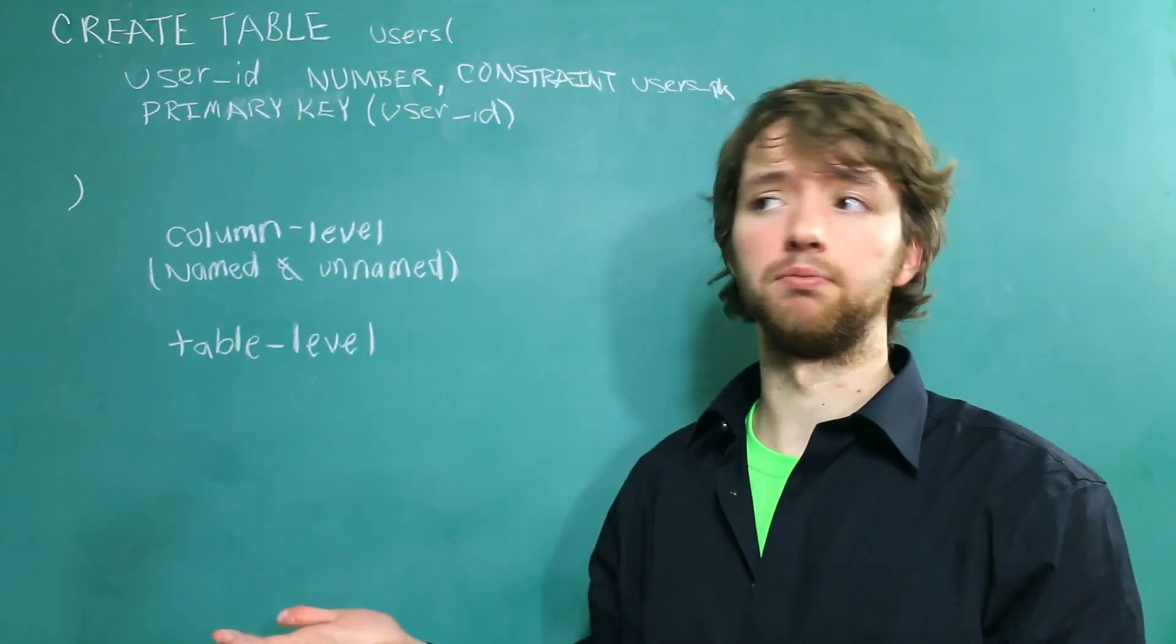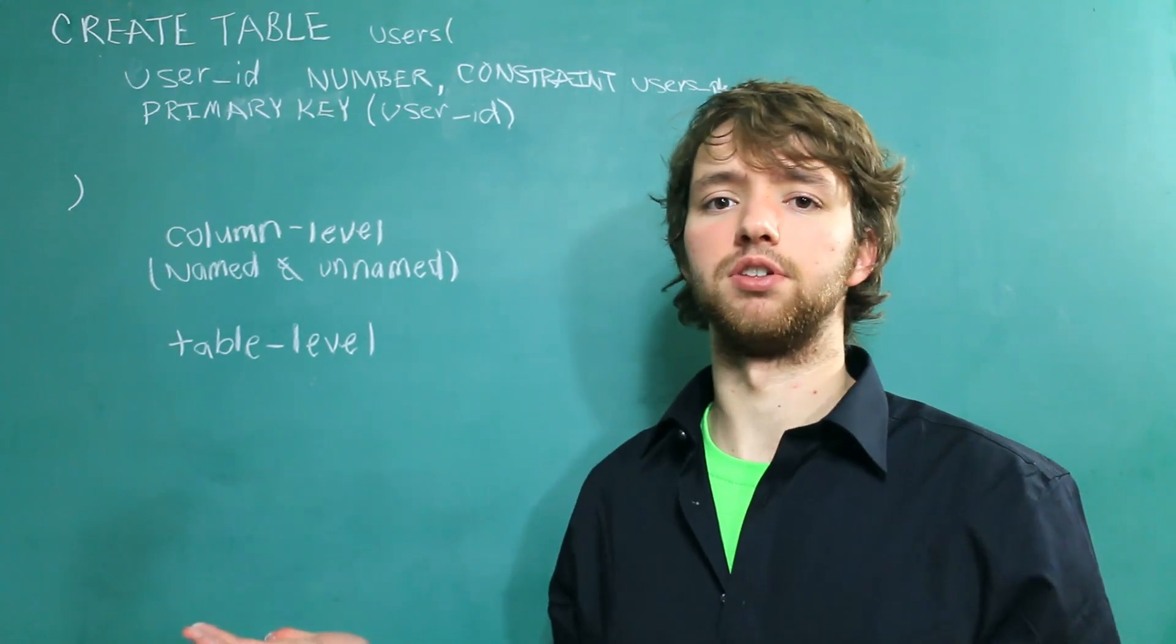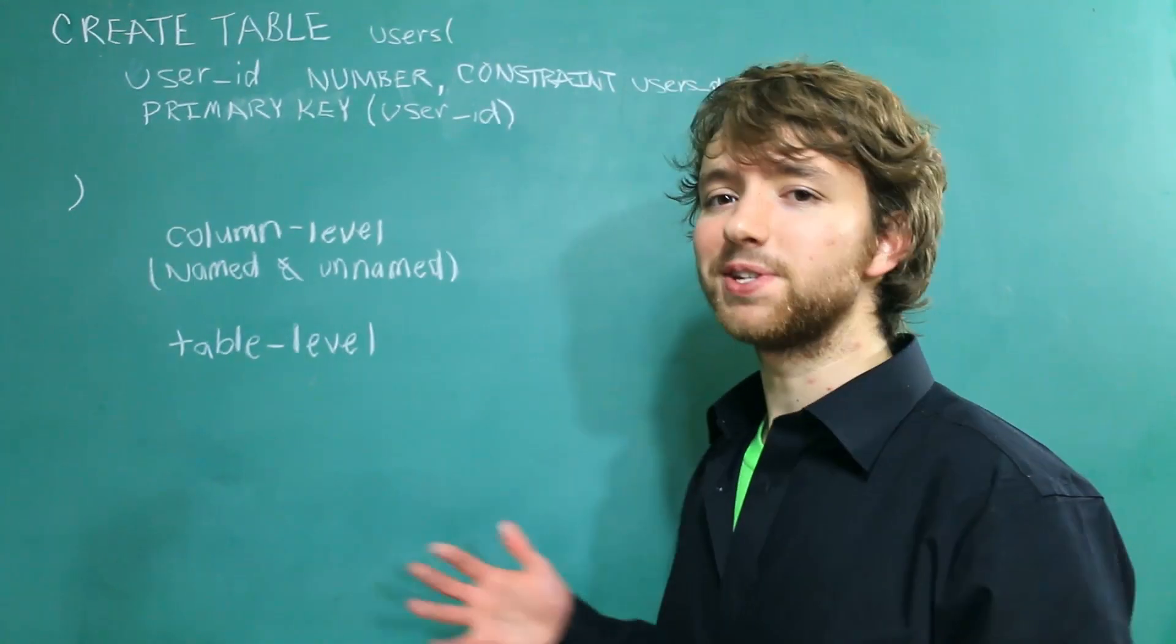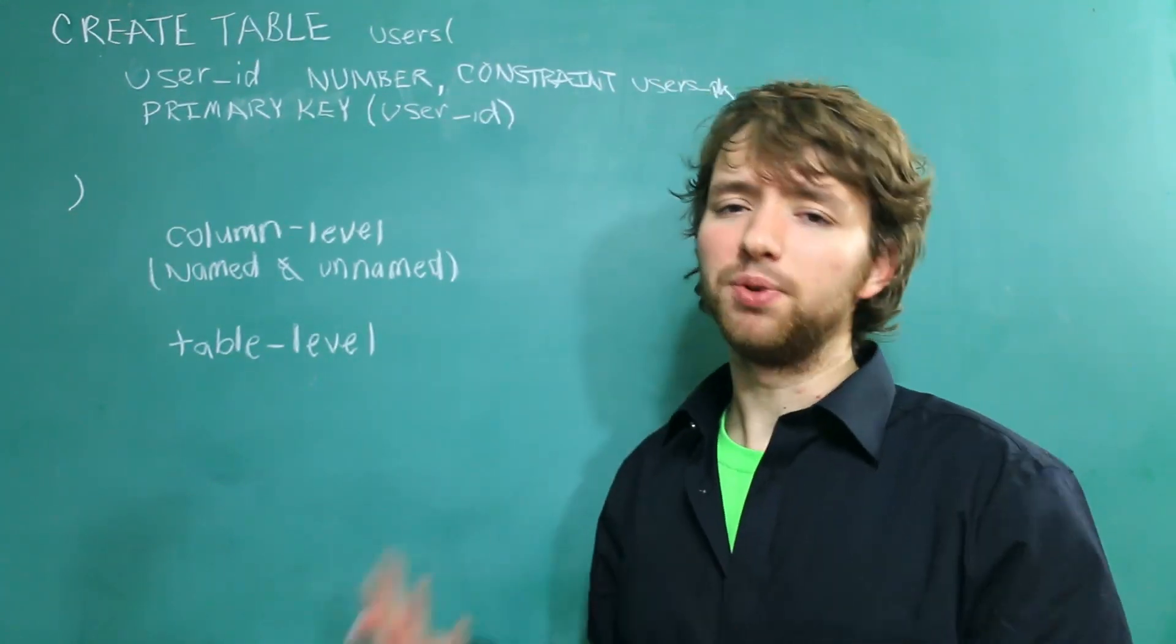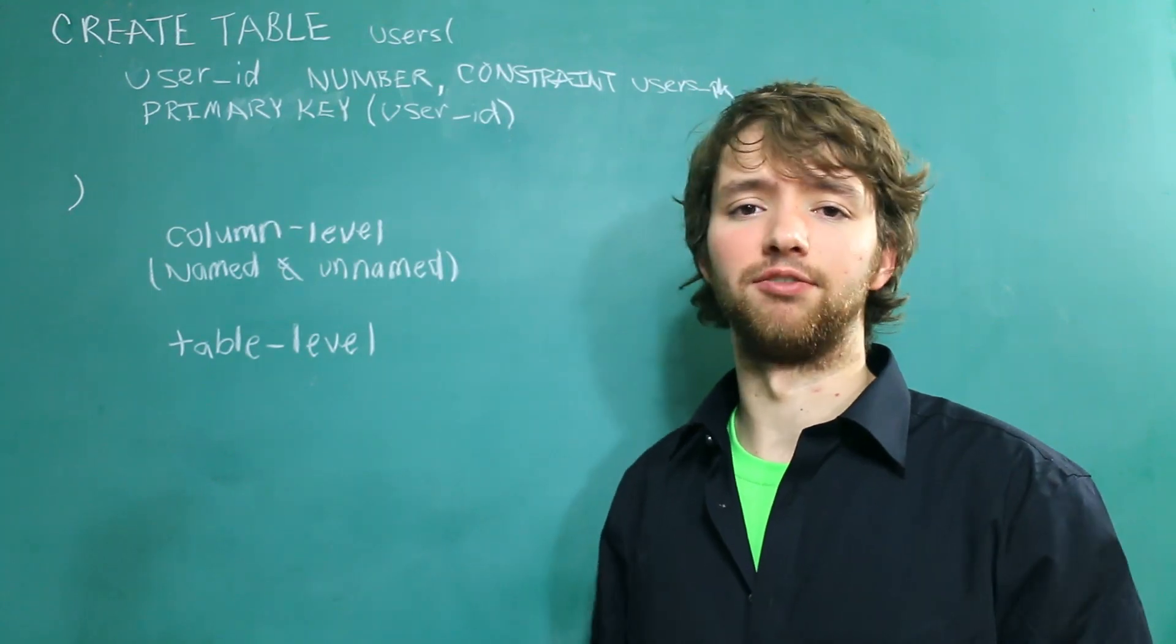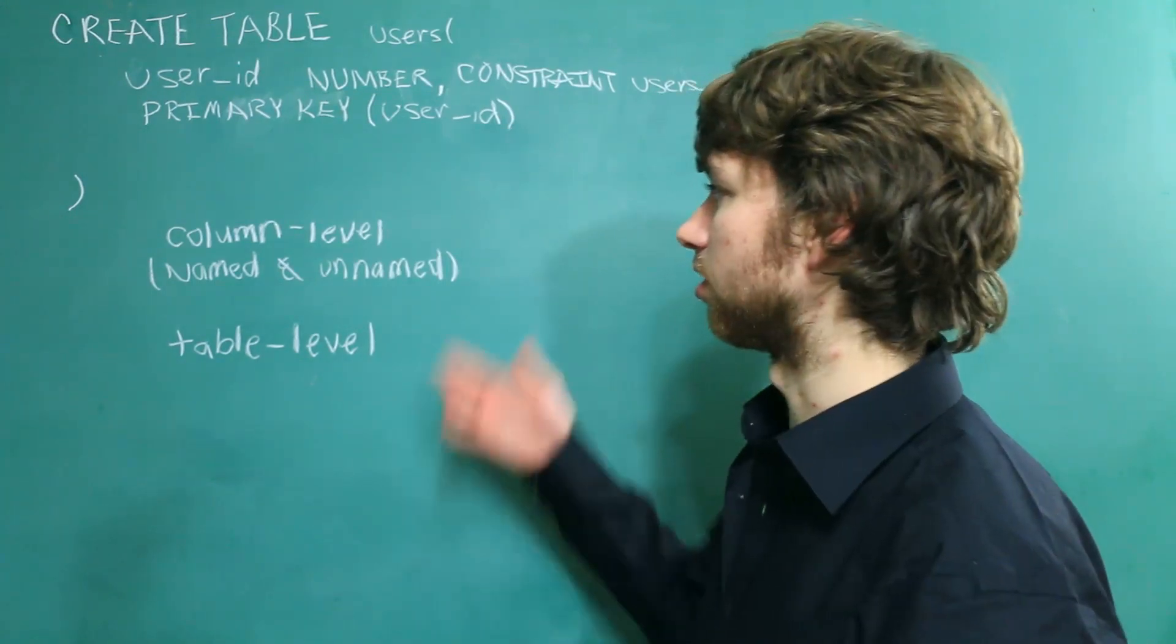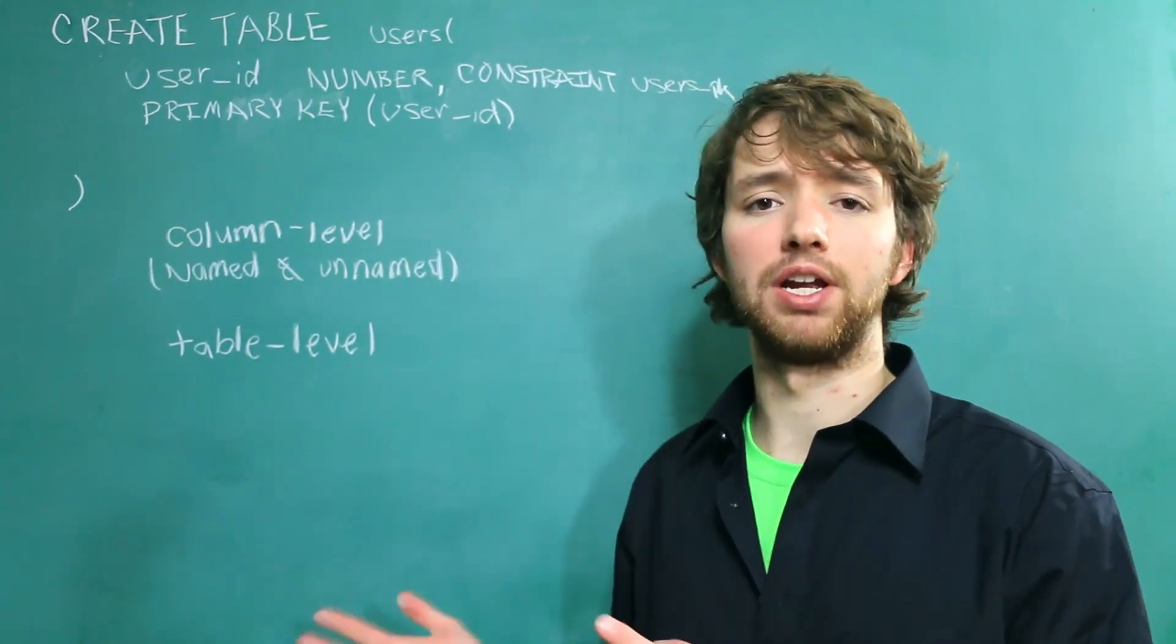Because we can't just say, hey, make a primary key, and it's just supposed to know which column we want it to be on. So this is how you do it with a primary key. With different constraints, it's going to be slightly different. But you guys get the big picture of how there's mainly three different ways you can do things.